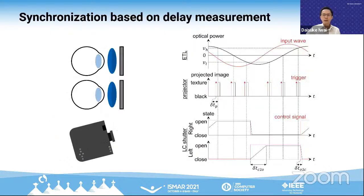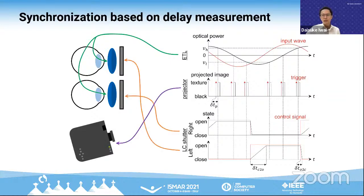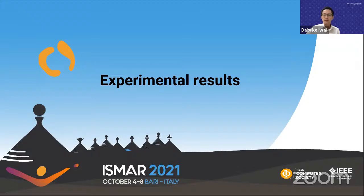The whole rendering pipeline: assume we display two virtual bars on a corner surface. First, we compute perspectively correct images for the observer's eye and compute its depth map and the depth map of the projection surface. Then we divide the rendered image to project them separately at different ETL optical powers and apply lens breathing compensation. The output images are then projected exactly when the ETL's optical power becomes the corresponding value. To synchronize ETLs, active shutter glasses, and the projector, we measured the delay from input signals.